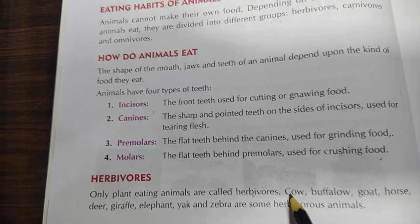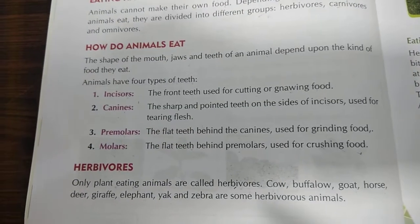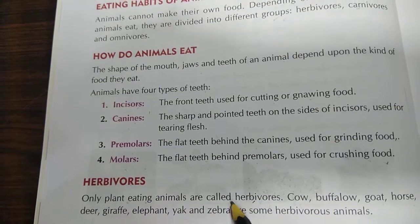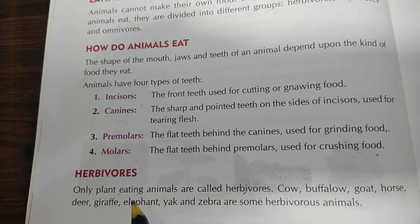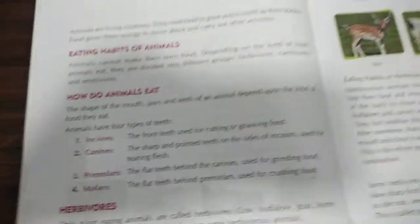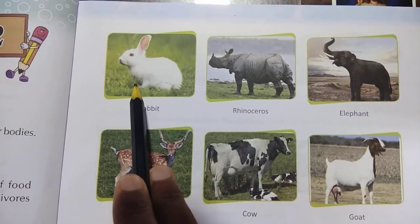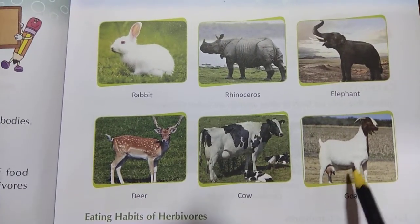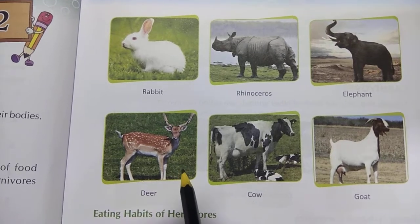Did you see a cow eating flesh? No — cows always eat only plants. So, plant-eating animals are called herbivores. Examples: cow, buffalo, goat, horse, deer, giraffe, elephant, yak and zebra. Looking at pictures: rabbit, rhinoceros, elephant, deer, cow, goat — all these animals eat only plants. They are called herbivores.